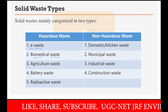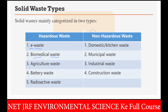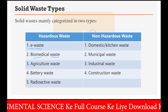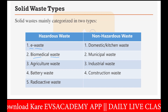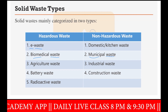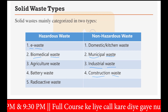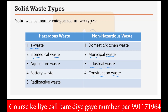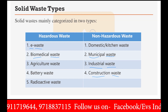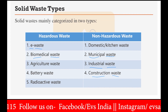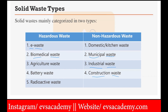Then we have non-hazardous waste — for example, domestic or kitchen waste coming from household operations. Then municipal waste: papers, plastics, and different materials found in municipal waste. Then industrial waste coming from any particular type of industry. Construction waste — for example, building materials, cement, and raw building materials coming from demolition — those are all under the category of construction waste, which is a type of non-hazardous waste.